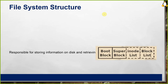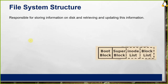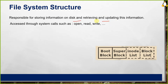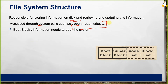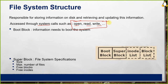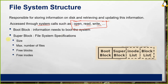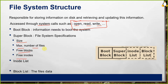The file system structure is responsible for storing, retrieving, and updating information on disk. It is accessed through system calls such as open, read, or write. The structure includes: boot block — information needed to boot the system; super block — file system specifications such as size, maximum number of files, free blocks, and free inodes; inode list; and block list where the actual file data resides.